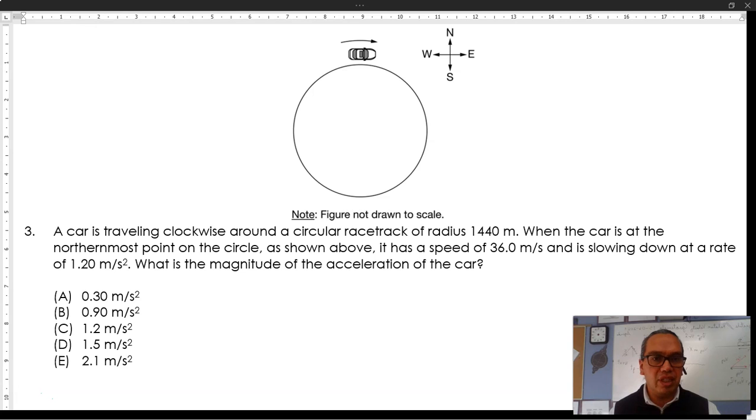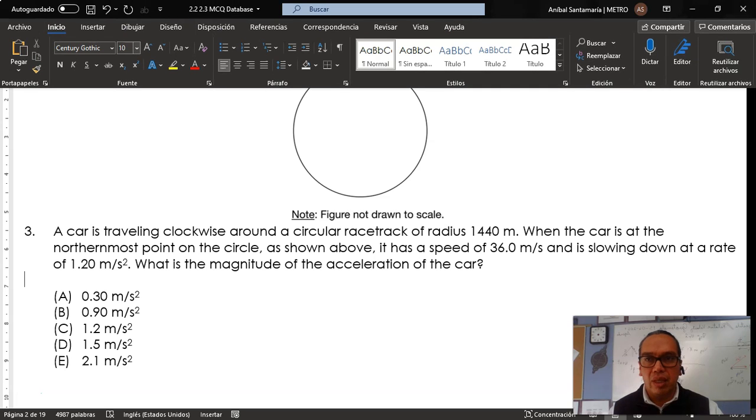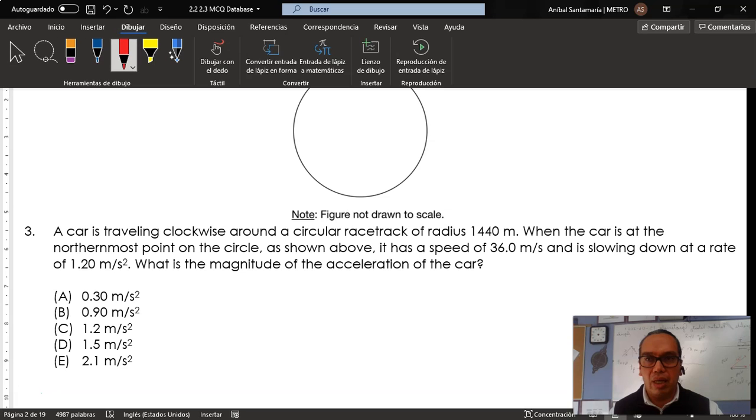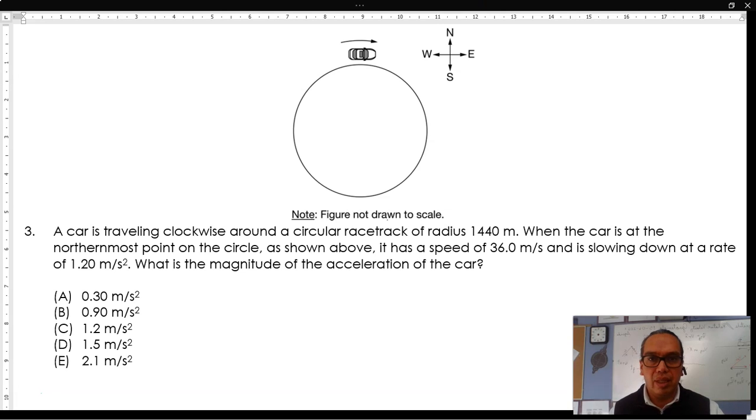it has a speed of 36 meters per second and is slowing down at a rate of 1.20 meters per second squared. What is the magnitude of the acceleration of the car?